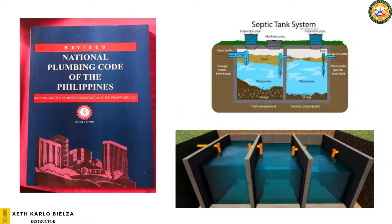Our sewer line must go to a septic tank if a centralized sewage treatment plant, or STP, is not available. There are cities that already have their own STP, and some residential developments have a dedicated STP for their planned unit development. But according to the code, if an STP is not available, we must provide a dedicated, watertight receptacle — our septic tank.